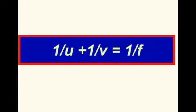This formula connects the object distance u, the image distance v and the focal length of the lens f. Unfortunately, there is more than one sign convention for u, v and f.